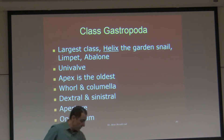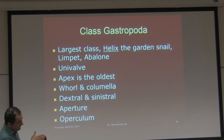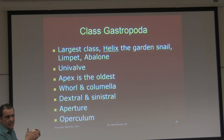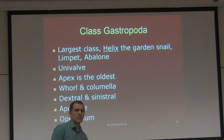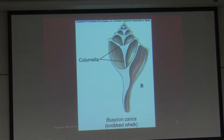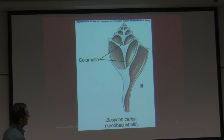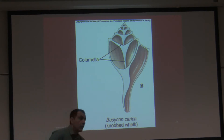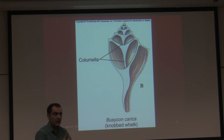Operculum — not all shells have it, but it is a flap, a piece of skin that covers the aperture, and it is called the operculum. And columella — I have a shell cut in the lab; they cut the shell so you can see the columella. I keep it stashed away so it doesn't get broken or lost.